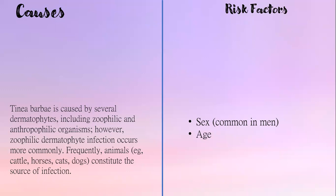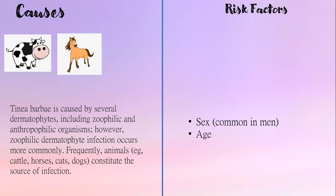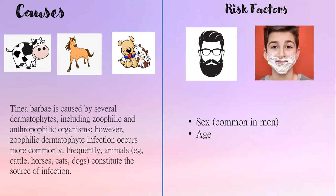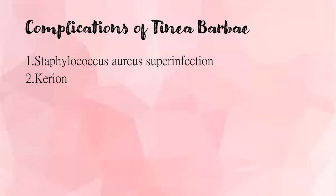Animals such as cattle, horses, cats, and dogs constitute the source of infection. Risk factors include sex, because men are affected almost exclusively due to the disease involving the bearded areas of the face and neck. And age, because hair appears on the face at puberty; therefore, tinea barbae may occur almost exclusively in older adolescent and adult males.